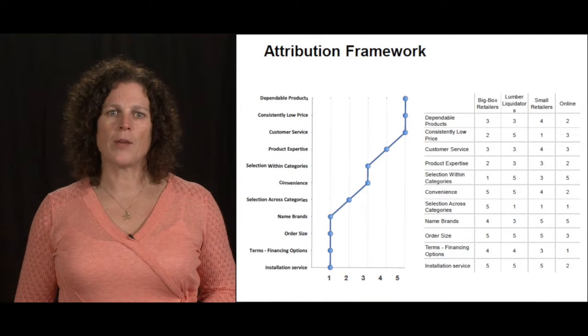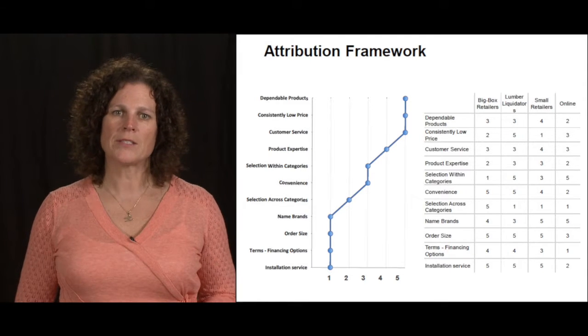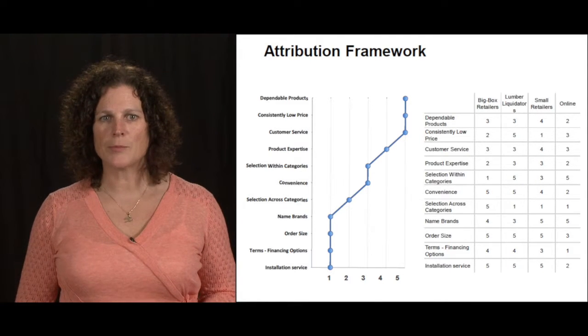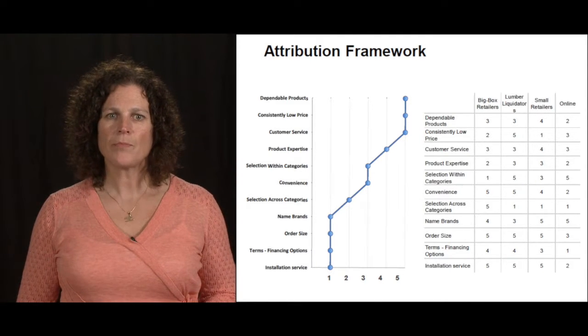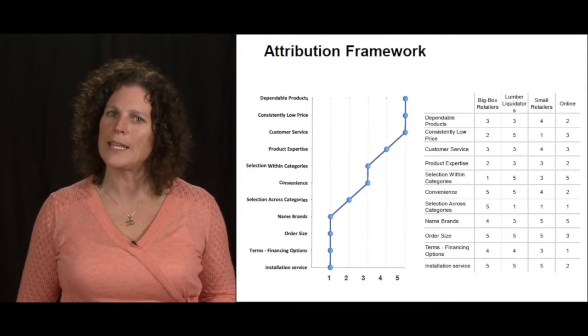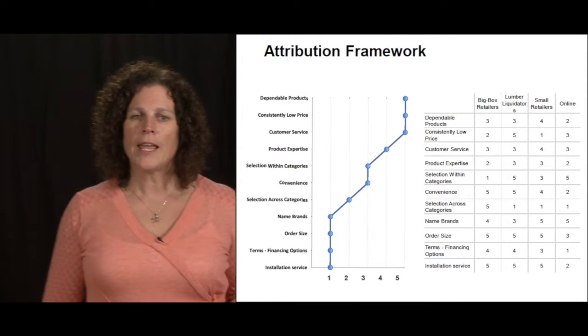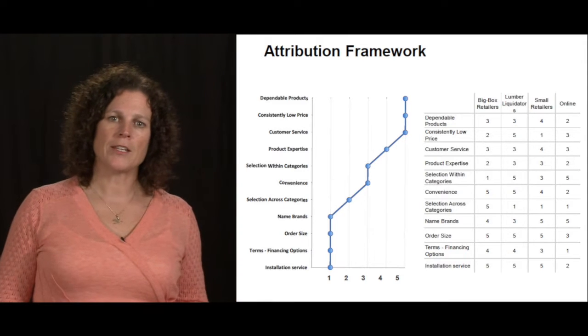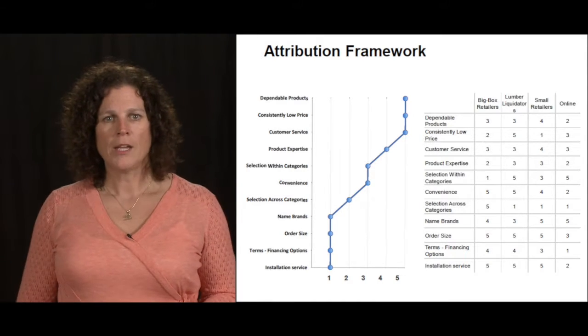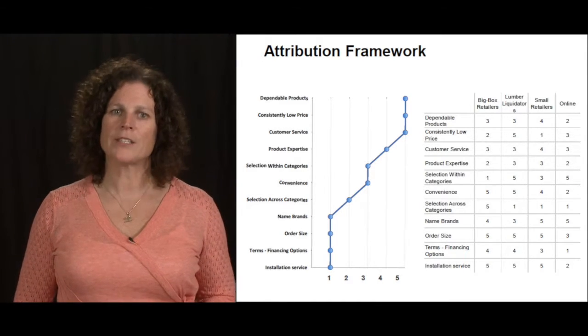When we think about the Attribution Framework, we want to come up with the characteristics, the attributes of the marketplace. We want to identify our key competitors that are playing in the arena. Today you might already be differentiated and this will help confirm it. If you're not, you'll see this very obviously.